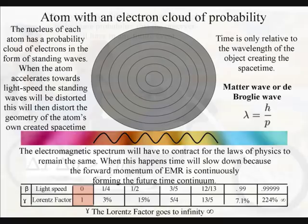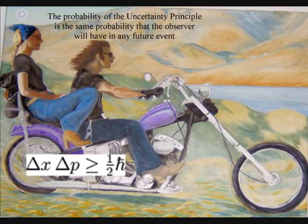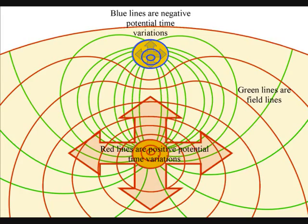The probability of the uncertainty principle is the same probability that the observer will have with any future event. It is because the atoms can distort the geometry of spacetime that we have electromagnetic fields.